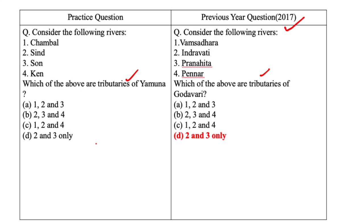The Yamuna is joined by Chambal, Sin, Betwa, and Cane on its right bank, which originate from the Peninsular Plateau, while Hindun, Rind, Singar, and Varuna join it on its left bank. Much of its water feeds the western and eastern Yamuna and Agra canals for irrigation. The Son is a large south-bank tributary of the Ganga, originating in the Amarkantak Plateau; after forming waterfalls at the edge of the plateau, it reaches Arrah west of Patna to join the Ganga. Since Son is a tributary of Ganga, options A, B, and D can be eliminated. The correct answer is Option C — 1, 2, and 4 — Chambal, Sin, and Cane are tributaries of the Yamuna River.